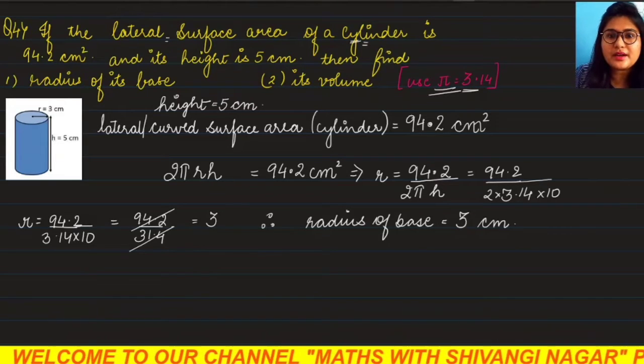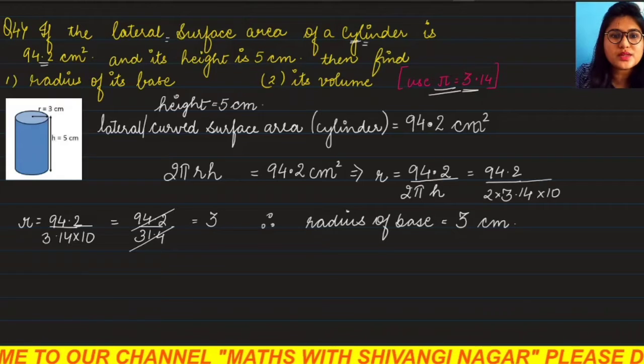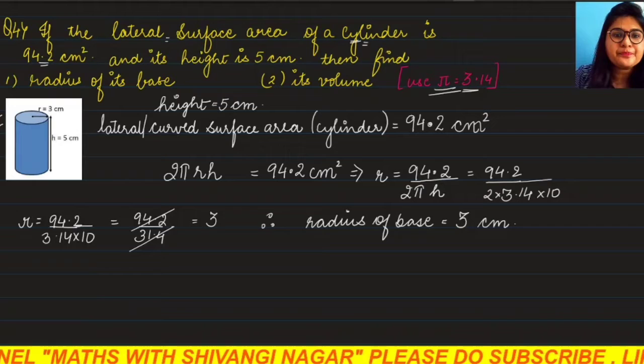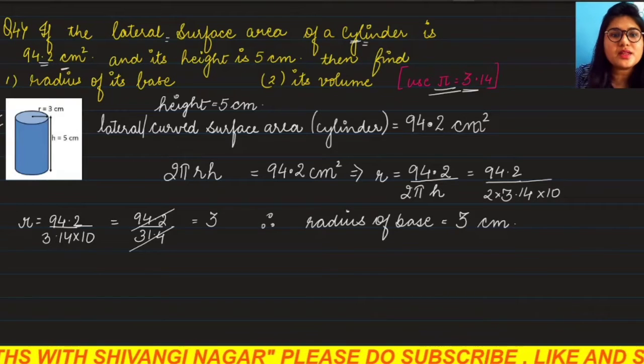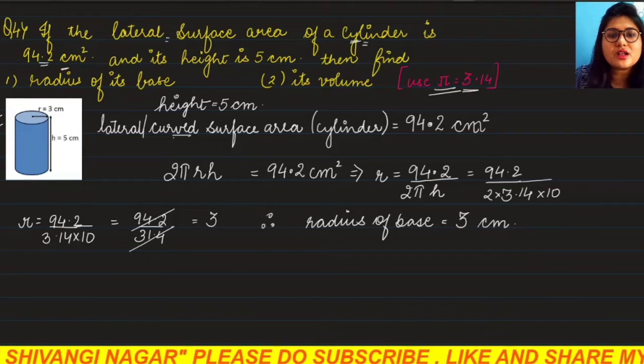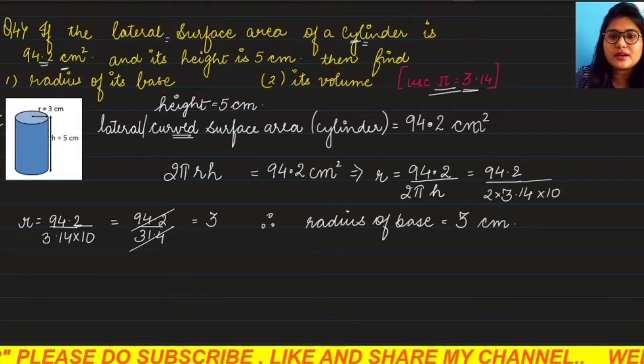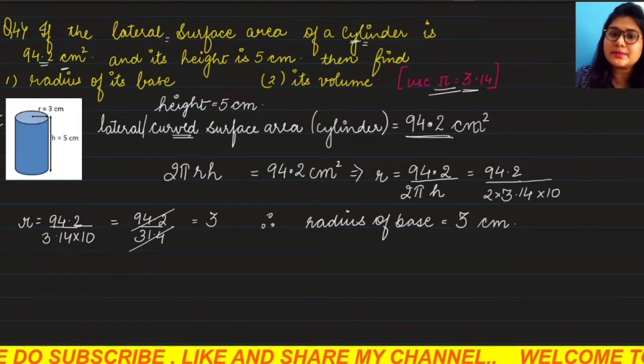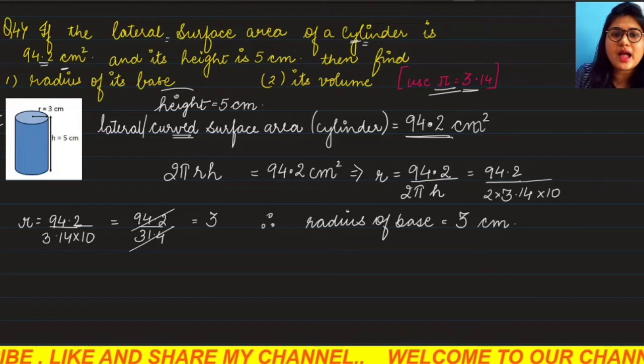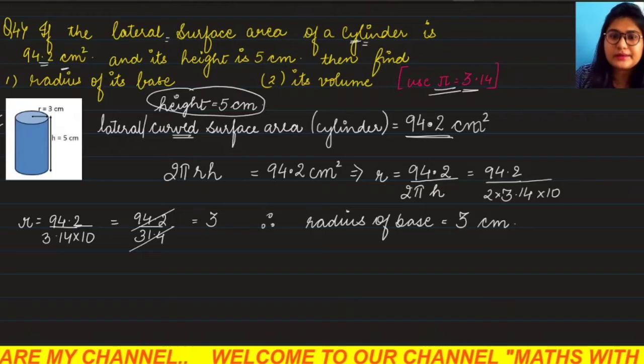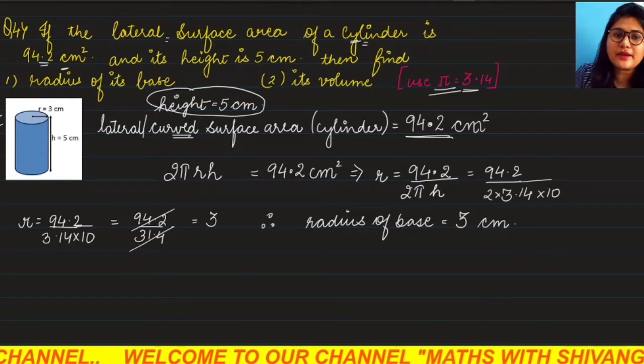The question says: if the lateral surface area of a cylinder is 94.2 cm², I have made the figure over here. It has a lateral surface area or curved surface area, one and the same thing, which is given as 94.2 cm². And its height is 5 cm. What we have to find is the radius and its volume.